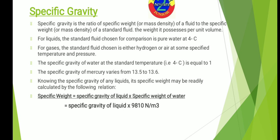Now, how to find specific weight. Specific weight of a fluid equals the specific gravity of the fluid multiplied by the specific weight of water. Since specific gravity of a liquid is the ratio of the specific weight of the fluid to the specific weight of water, by using this formula you can find the specific weight of any fluid.